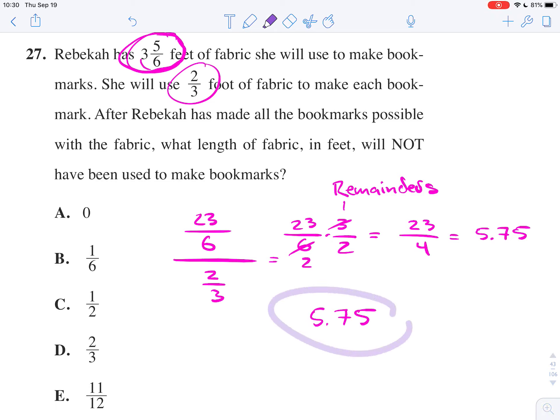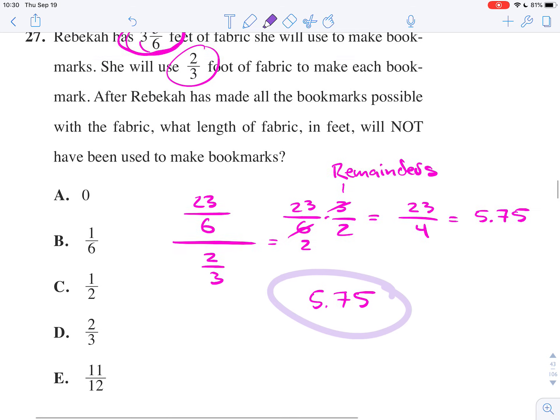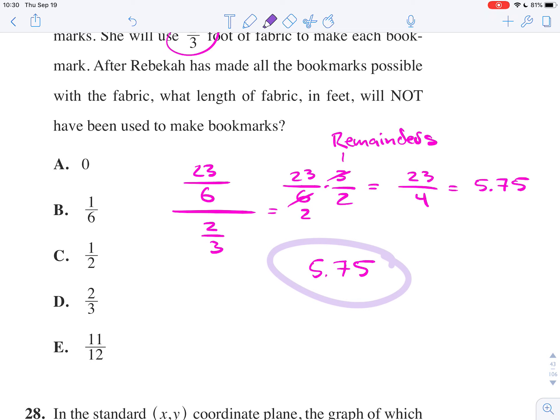We have to consider what this means. This is the number of bookmarks that Rebecca can make. So, she can make 5 and then 0.75 bookmarks. Well, the 0.75 is the leftover. That means that she can make 0.75, or if we think about 0.75.